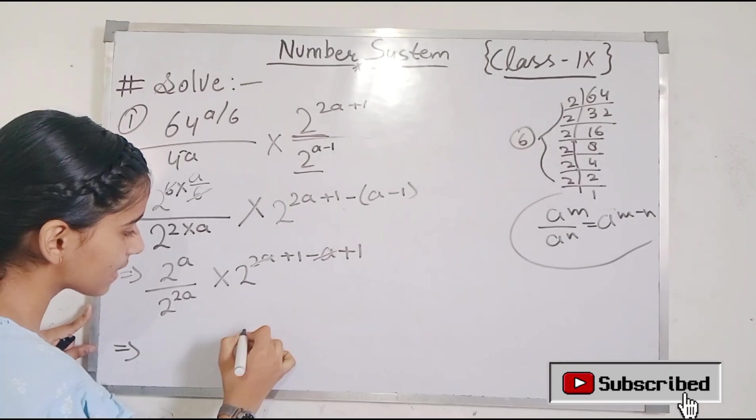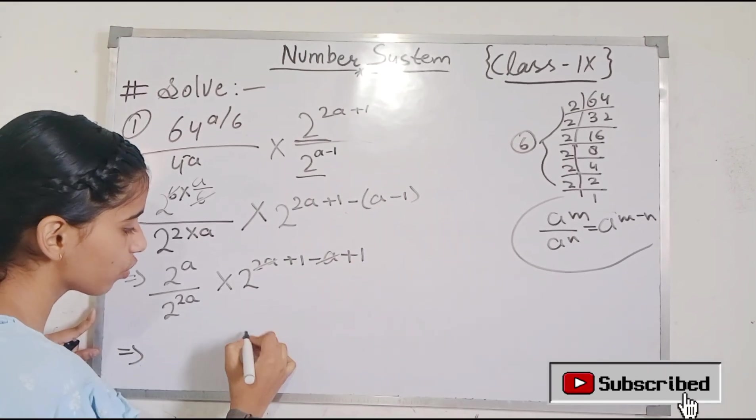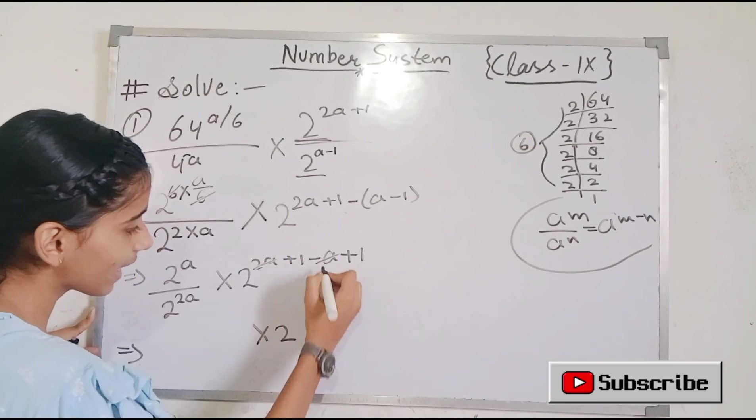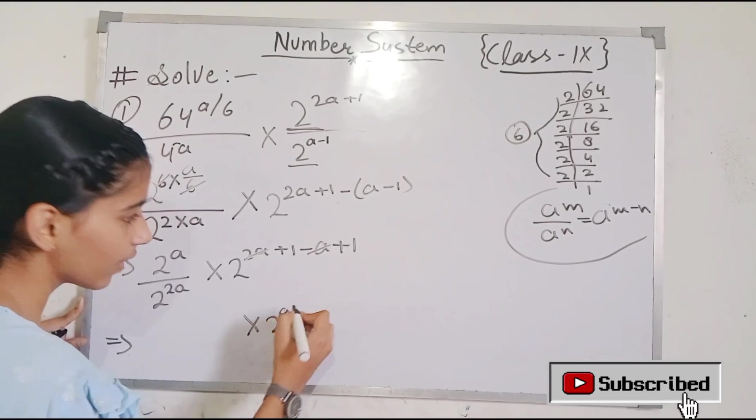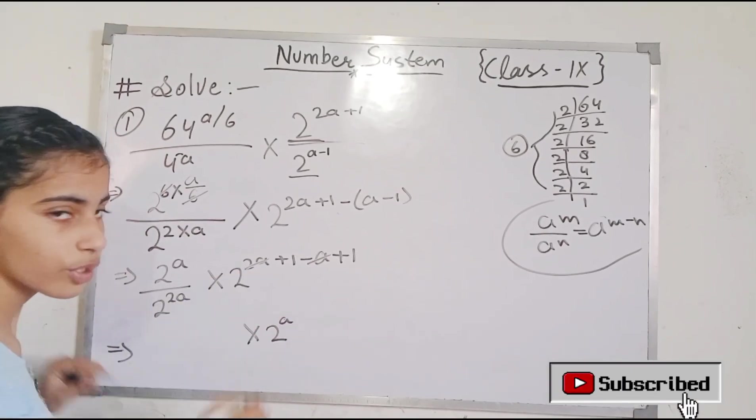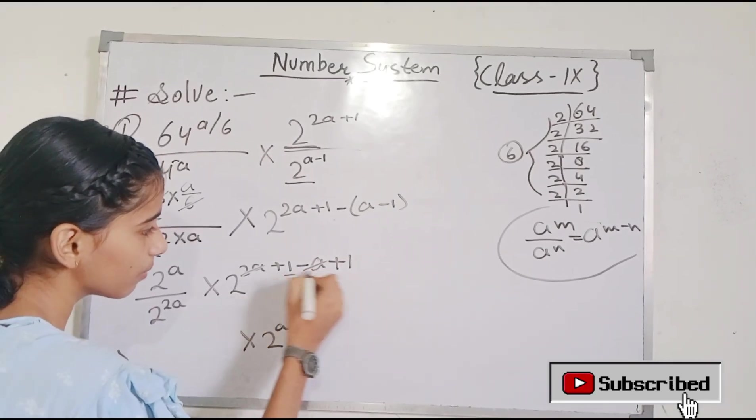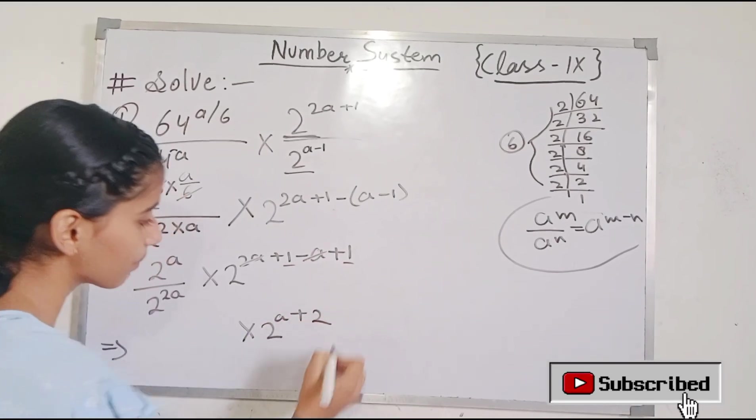What will remain? We have this solved for you. What will remain? 2a plus 1, 1 will be plus because 2a has plus sign. Then 1 plus 1 is 2.